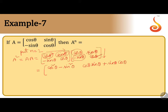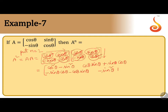Now, second row, second column: minus sin θ into cos θ gives minus sin²θ, and cos θ into cos θ gives cos²θ, plus cos²θ.